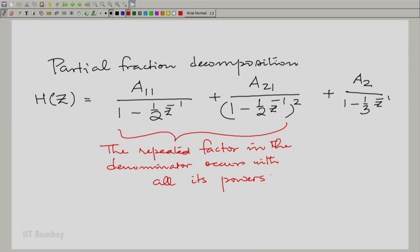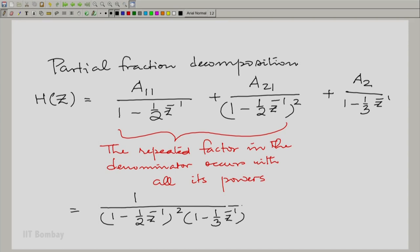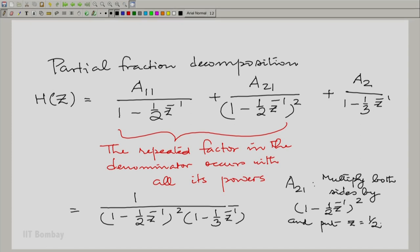To make the partial fraction decomposition, we equate H(Z) to 1 / [(1 - (1/2)Z⁻¹)² · (1 - (1/3)Z⁻¹)]. Let us find the easier coefficients first. We can find A21 by multiplying both sides by (1 - (1/2)Z⁻¹)² and then putting Z = 1/2. That gives 1 / (1 - 1/3·2) = 1 / (1 - 2/3) = 1 / (1/3), so A21 = 3.